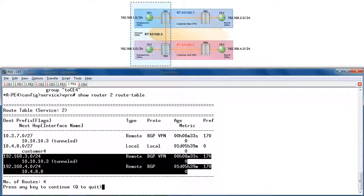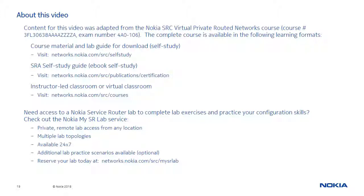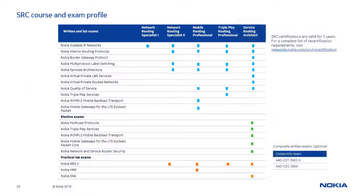And that does it for this video on Extranet VPRN. Thanks for watching and see you next time. Content for this video was adapted from the Nokia SRC Virtual Private Routed Networks course. You can access the complete course via any of the three learning formats shown, as well as get remote private access to a service router lab to complete the course lab exercises. This table identifies the recommended courses and required exams for each of the five available certifications in the program.